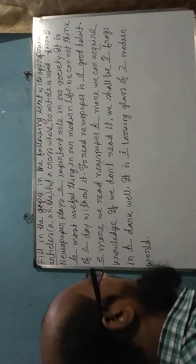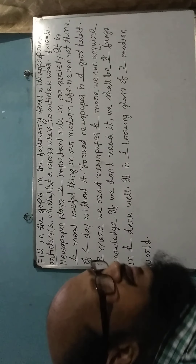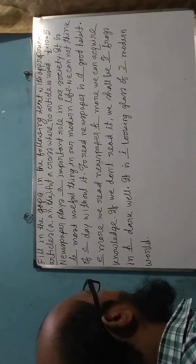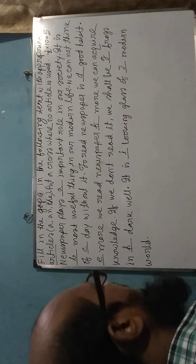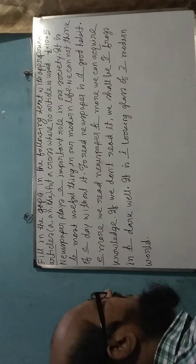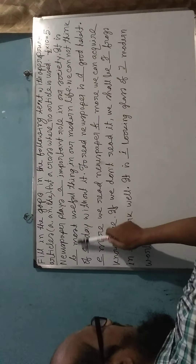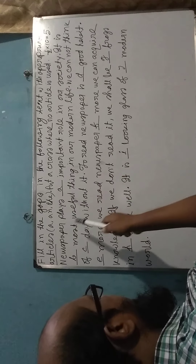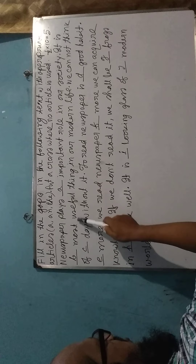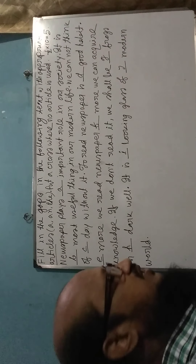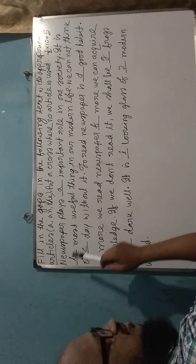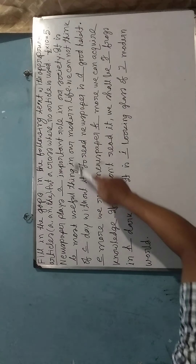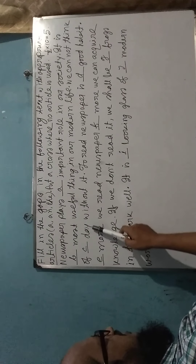Now we are explaining the articles. First: 'Newspaper plays [blank] important role.' Before 'important,' you have to use an article. Since 'important' starts with a vowel sound, we use 'An.' Next: 'It is [blank] most useful thing.' You should always follow the word used after the article blank. Here 'most' indicates a superlative degree, and before a superlative degree we use 'The.' So the answer is 'The most useful thing.'